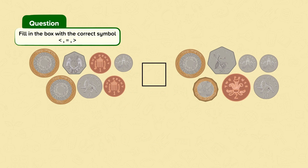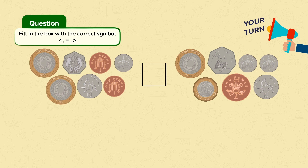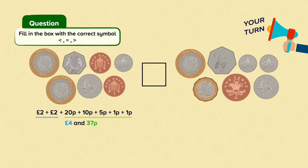Fill in the box with the correct symbol. First we need to work out the value of the coins from each side. Now it's your turn — pause the video and have a go at finding the total of each side, then compare the values. Looking at the pounds of the left hand side first, we have two 2 pound coins — two lots of two pounds — two pounds and two pounds equals four pounds. Looking at the pence, we have a 20p coin, a 10p coin, a 5p coin and two 1p coins. Adding all of these together we get 37p, so the total of the left hand side is four pounds and 37p.